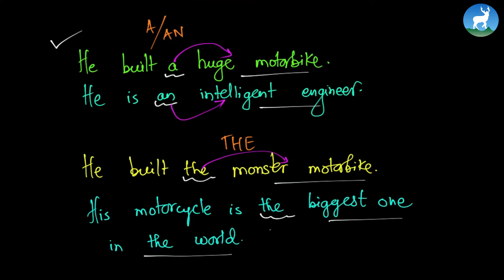In the second example, we use the because it is followed by a superlative adjective. Adjectives have three forms: normal, comparative, and superlative. Since we have a superlative adjective in the noun phrase, we use the article the. His motorcycle is the biggest one in the world. We use the world because there is only one world — this planet Earth. So this motorbike is the biggest one; no one has ever created a motorbike as big as Dunham's.